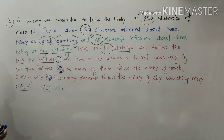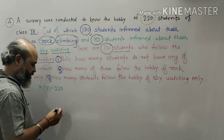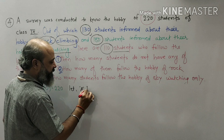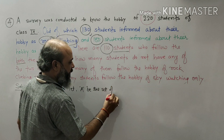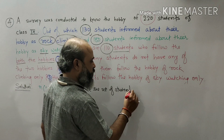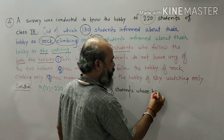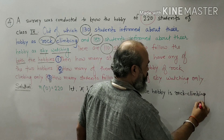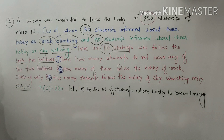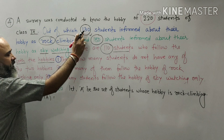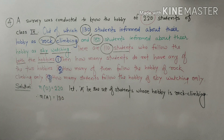Out of which, 130 students informed about their hobby as rock climbing. So let A be the set of students whose hobby is rock climbing. Therefore, number of A is 130.